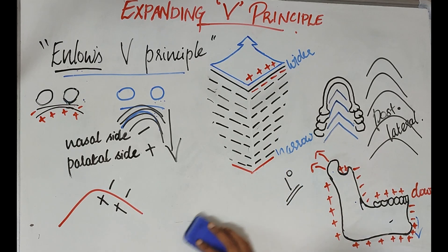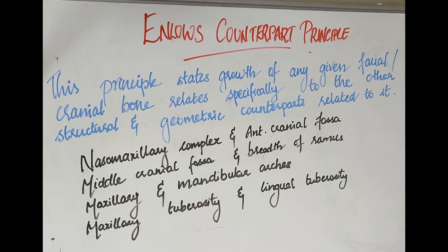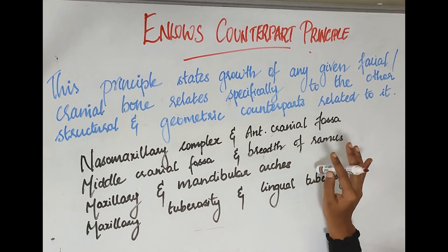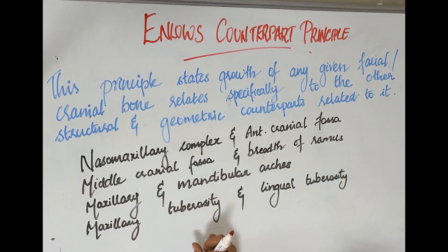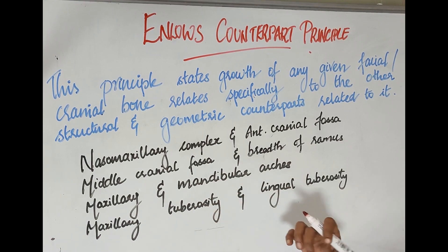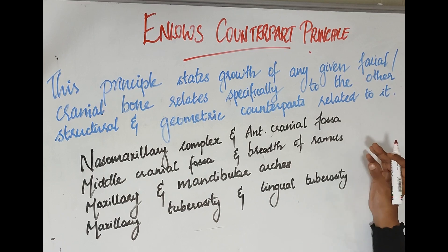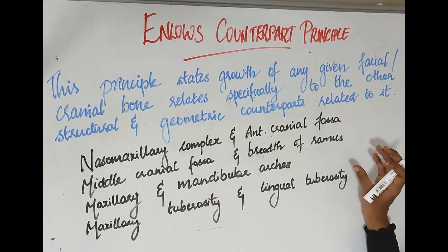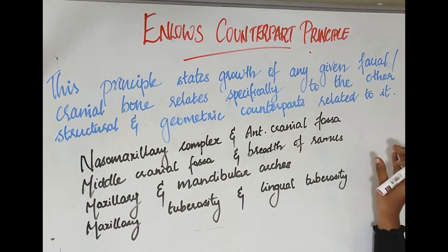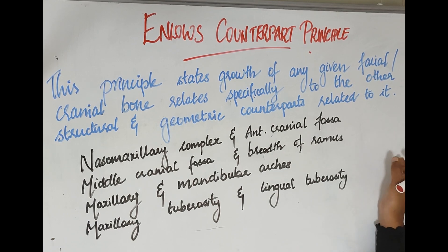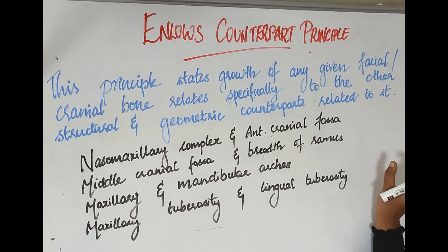That is Enlow's V principle. Next, Enlow's counterpart principle states that growth of any given facial or cranial bone will relate specifically to the other structural and geometric counterparts related to it. In other words, growth of one bone in the craniofacial region will influence growth of another — its counterpart — in order to maintain a balance in growth and establish a functional equilibrium.